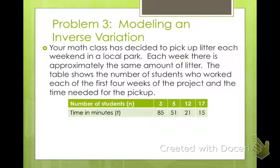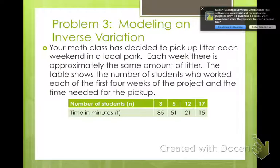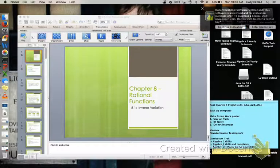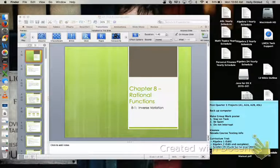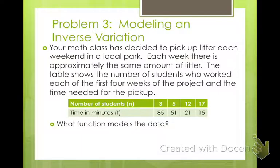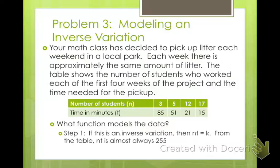So let's go ahead and write a function that models this data. Since we're talking about inverse variations, this is probably going to be an inverse variation, because it makes sense that the more people there are, the less time it takes to clean up, right? So what's the function that models the data? Well, first we need to find out what our constant is. So if we multiply 3 times 85, 5 times 51, 12 times 21, and 17 times 15, what numbers do we get? Almost all of them equal about 255. So our inverse variation is going to be y equals 255 divided by x. So the minutes divided by the number of people that there are. So there's our function.